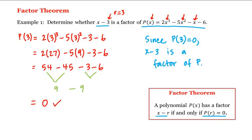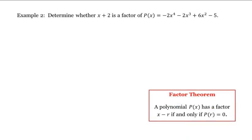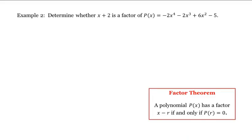Let's see another example. Let's determine whether x plus 2 is a factor of p. Again, we'll use the factor theorem, which states that x minus r will be a factor if r is a zero of p. We want to determine whether x plus 2 is a factor of p of x. But what is our r here? x plus 2 is really x minus a negative 2. So be careful here, our r is negative 2.